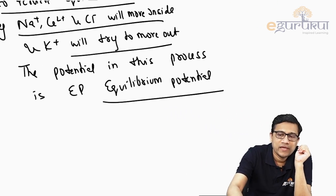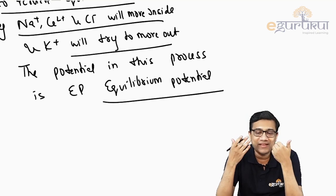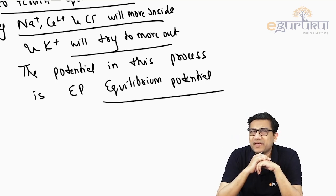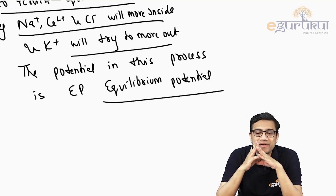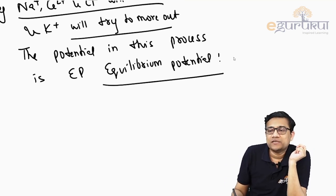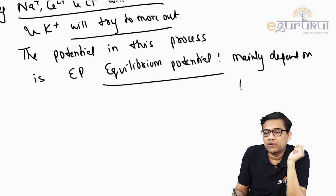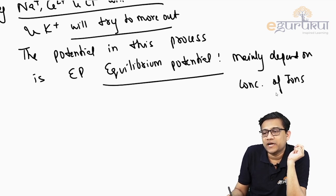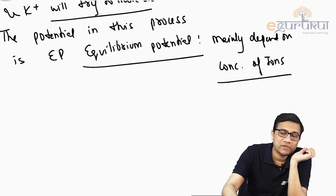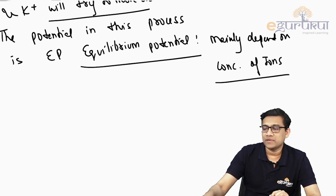The equilibrium potential depends on multiple factors like the valency of the ion, but the main factor is the concentration of ions. If asked for the main criterion, the answer is the concentration of ions.